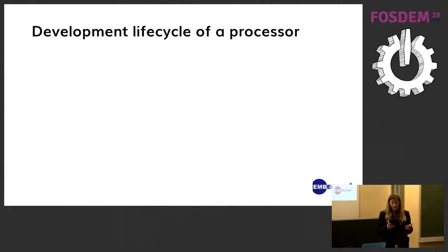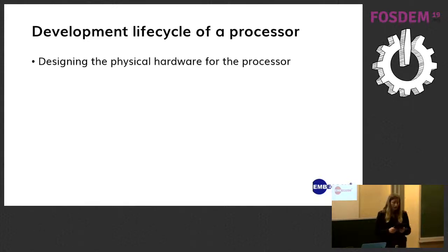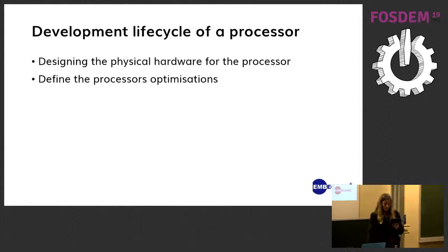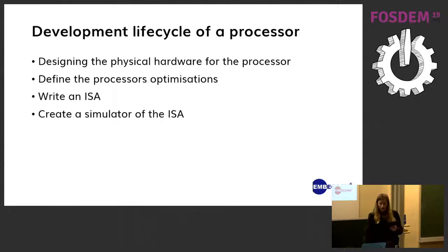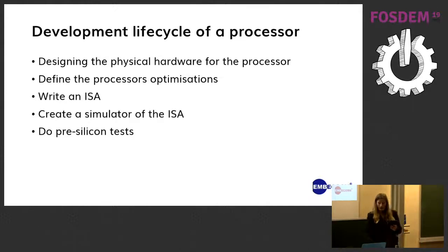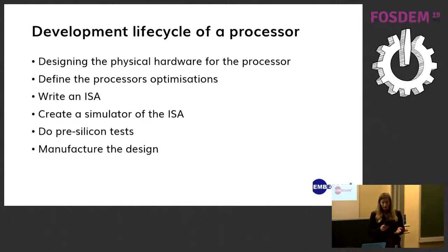There are some key steps in the development lifecycle of a processor: designing the physical hardware, defining the processor's optimizations, writing the ISA, creating the simulator of the ISA, running pre-silicon tests — which is where you take the ISA simulator and the hardware model and run them together — and then finally manufacturing the design. But designing a processor from scratch takes too long and is too expensive. ARM estimates that it takes about 300 engineer years to complete a new reasonable design.